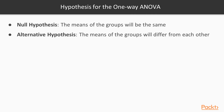In terms of hypotheses for a one-way ANOVA, there are two. The null hypothesis states that the means of the groups are going to be the same — there are no differences among the groups. The research, or alternative, hypothesis states that the means of the groups will differ from each other, meaning one treatment is better than the others.